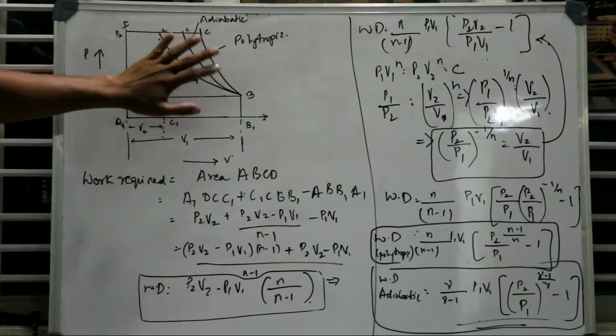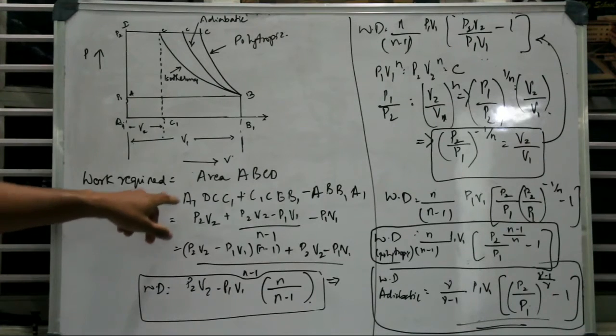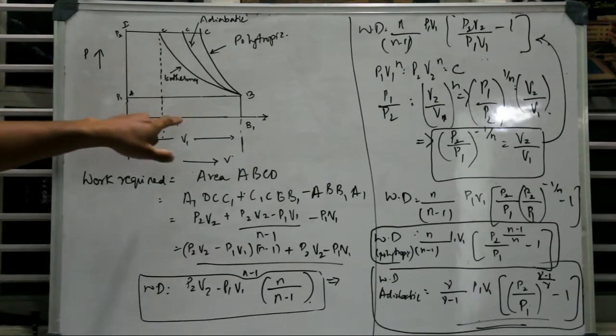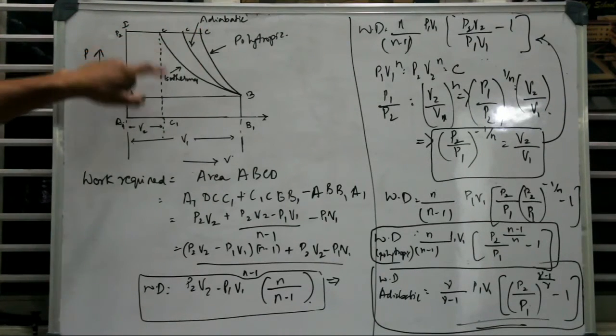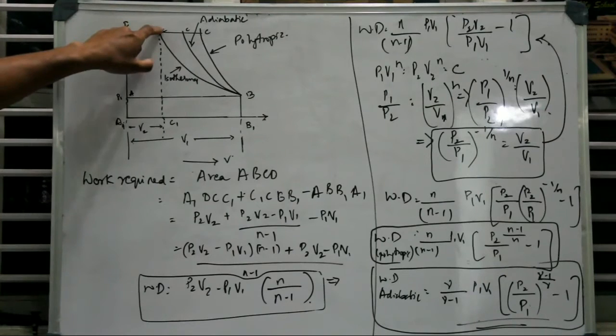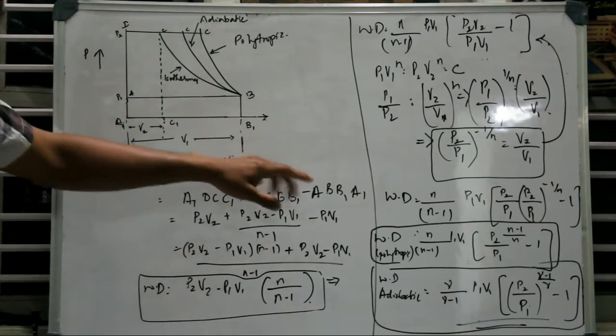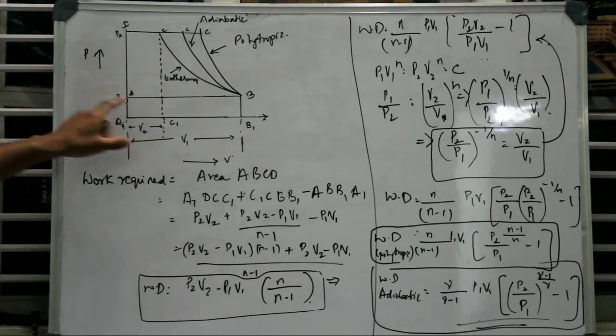So the work required is going to be A1, D, C, C1 plus C1, C, B, B1 minus this area, that is going to be A, B, B1, A1.